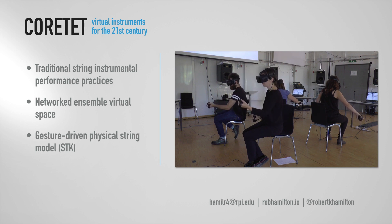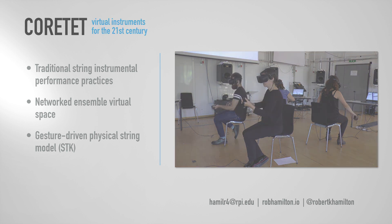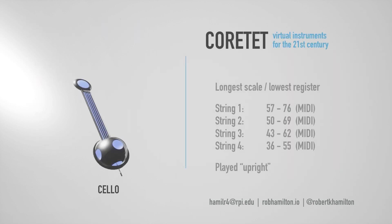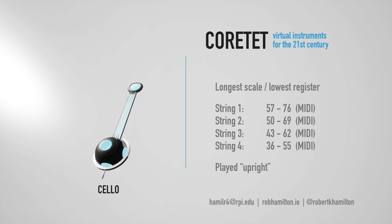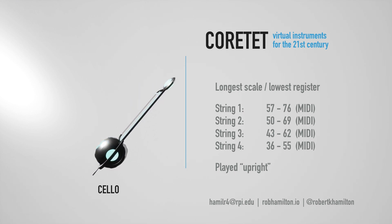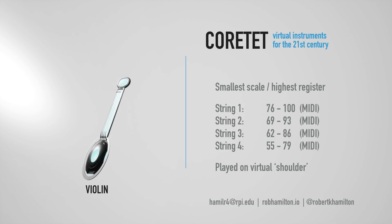Data from each performer's instrument is used to control a bowed string model from the synthesis toolkit, or Quartet can be shaped into something entirely new. Quartet can be reconfigured to mirror the physical design and sonic output of traditional string instruments, such as the cello, violin, or viola.